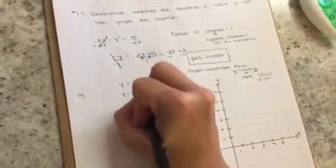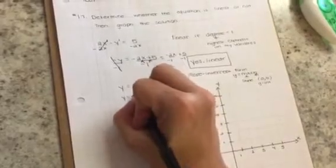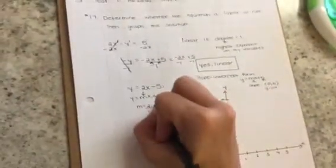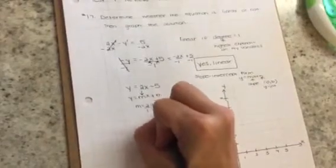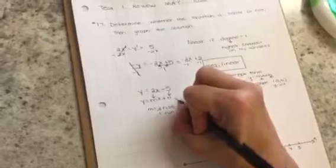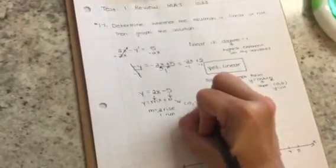So, putting this into slope-intercept form, I know that my slope is 2, which is 2 over 1. So I'm going to go up 2 over 1. I know that my b is negative 5, so my starting point is over 0, down negative 5. That is my y-intercept.